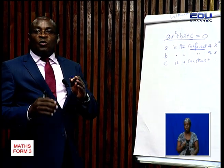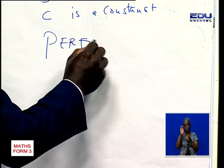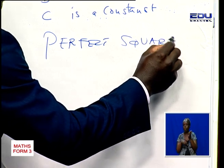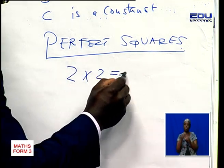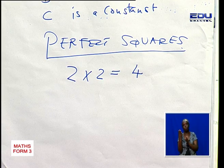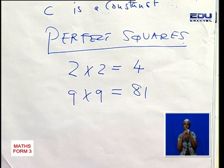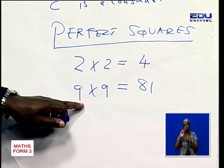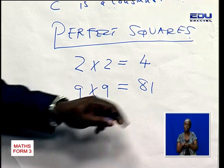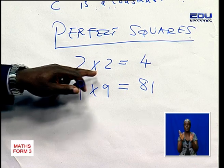Now, before we start solving quadratic equations, we need to look at perfect squares. When we look at perfect squares, we think of getting two equal numbers multiplied together. For example, 2 times 2 gives 4, and 9 times 9 gives 81. So 81 is a perfect square because the square root of 81 is 9 — its factors are 9 and 9. Similarly, the square root of 4 gives factors of 2 times 2.